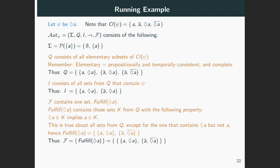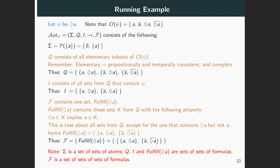This means that calligraphic F is the set shown here, which is a set of sets of states. And since for our automaton a state is a set of formulas, we have that calligraphic F is a set of sets of sets of formulas. Note that sigma is a set of sets of atoms, while Q, I, and fulfill of eventually A are sets of sets of formulas, and therefore calligraphic F is a set of sets of sets of formulas.